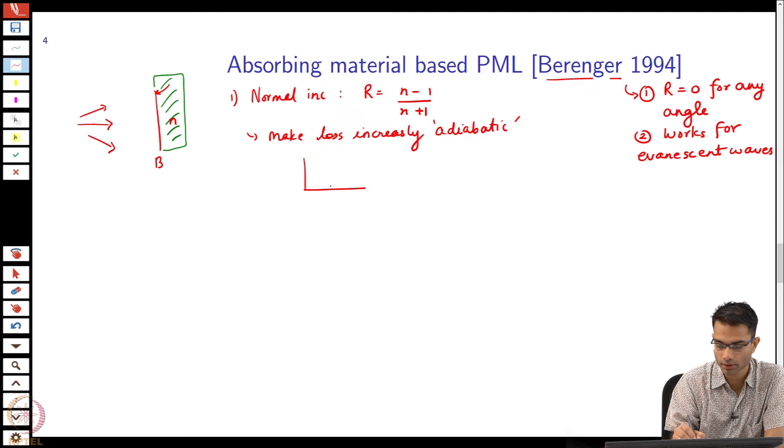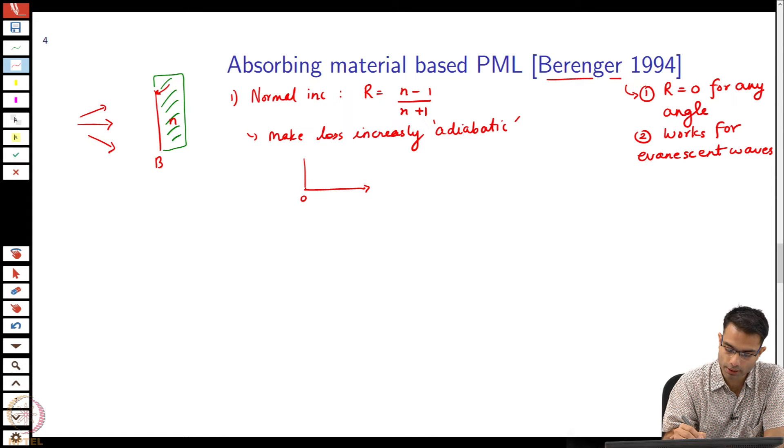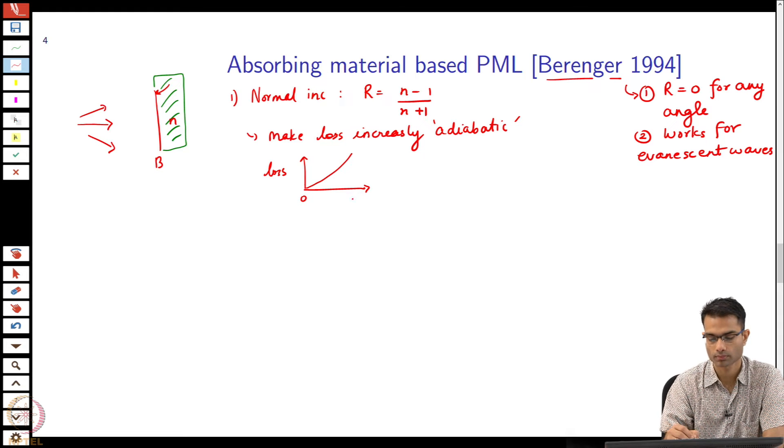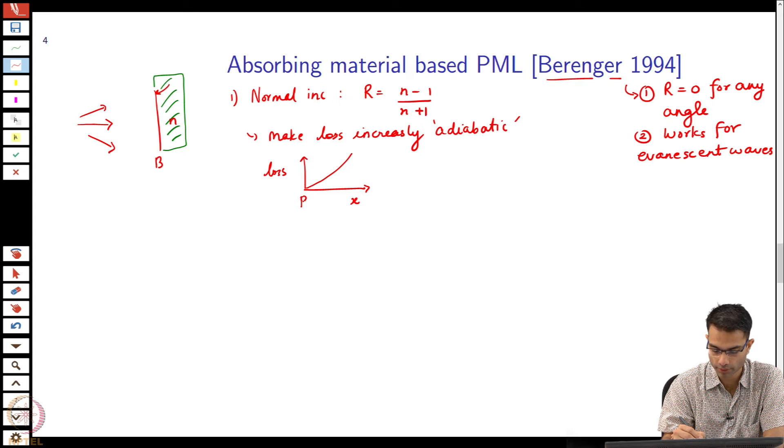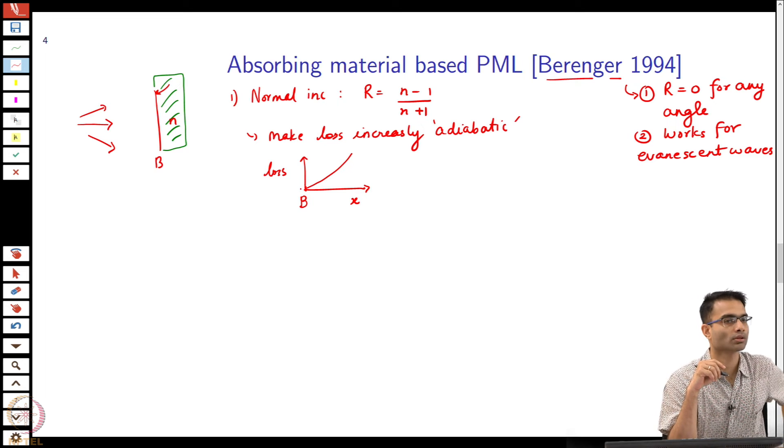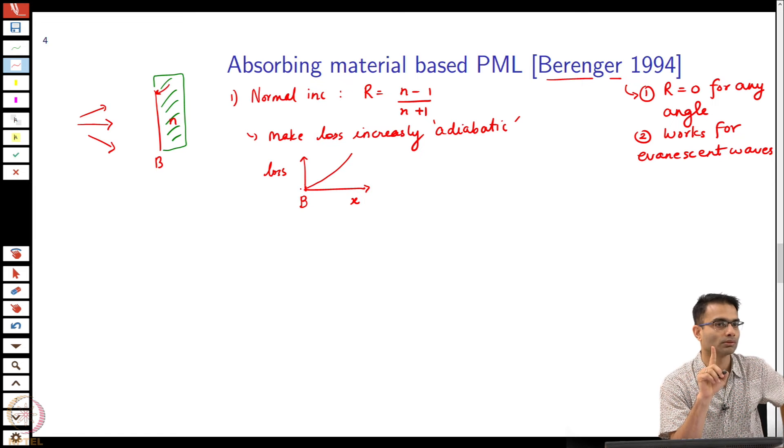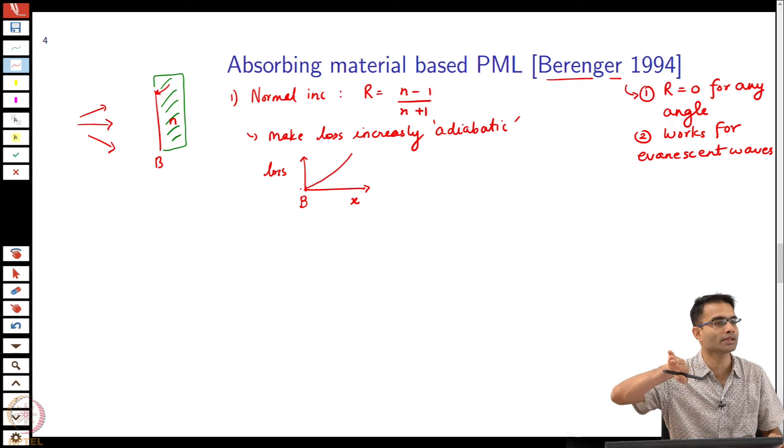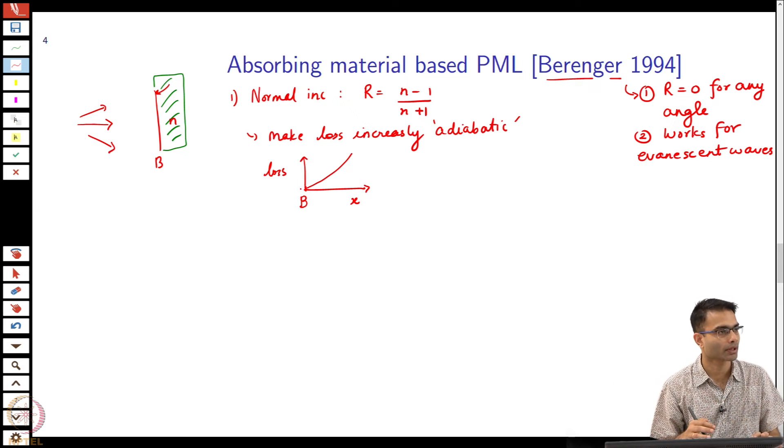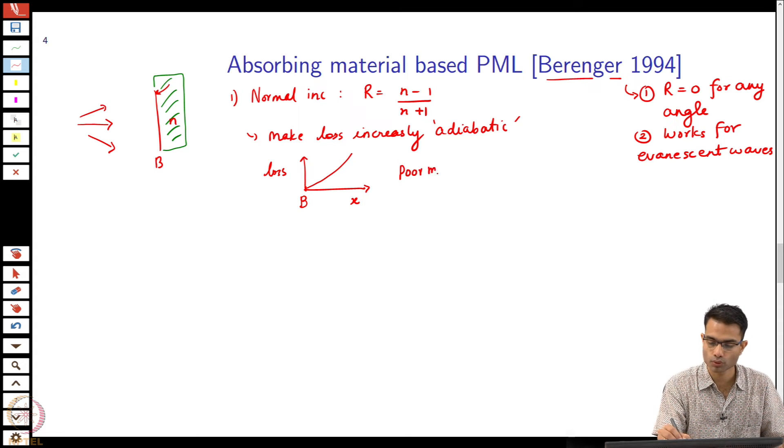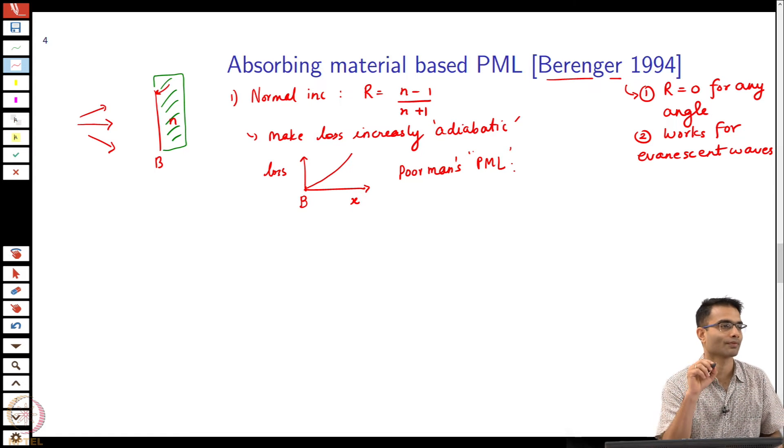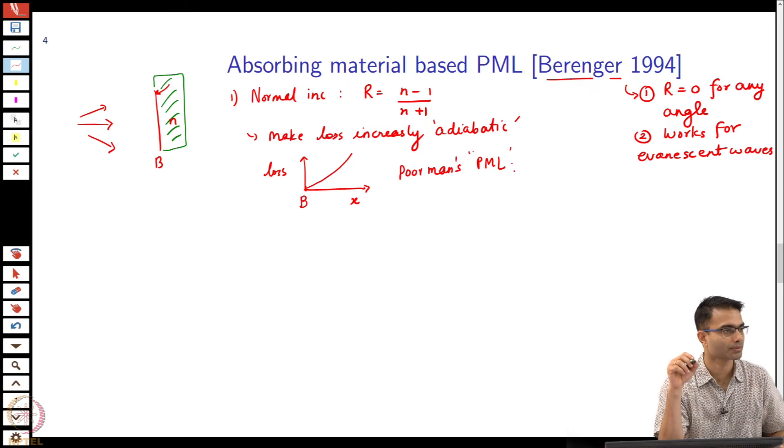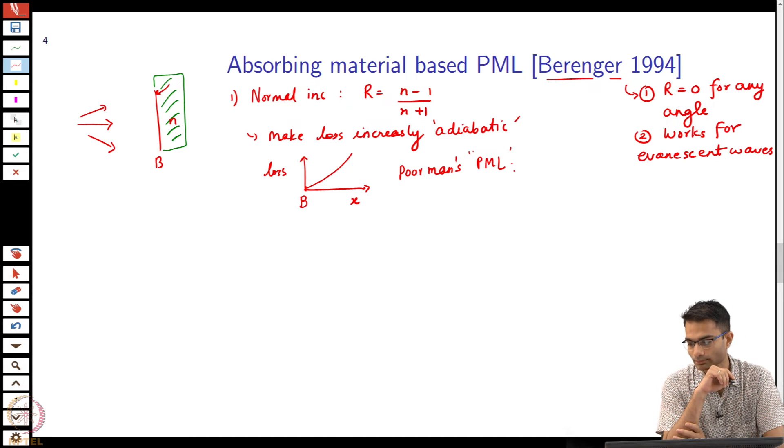In other words, supposing this is the boundary over here - at zero - and the loss part, what you can do is you can increase the loss part like this, and the boundary is sitting here. At the boundary, what is the value of n? Zero loss. So at the boundary the value of n is 1. Then I begin - the wave in some sense enters inside because it seems that there is nothing. It slowly enters inside, and by gradually increasing the loss factor you are able to gently absorb it. So this is - some people call this a poor man's or poor woman's PML. Increase the loss gradually - the reflection coefficient is greatly reduced.